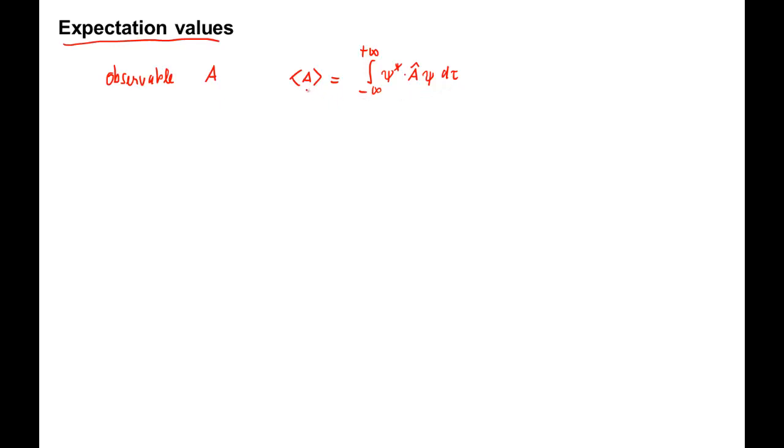The angular brackets indicate the expectation value or average. We can use this bracket notation to abbreviate the integral and write open bracket, psi, vertical bar, A hat, vertical bar, psi, close angular bracket. In this expression, the first psi is implicitly understood to be complex conjugate. The operator A is operating on the second psi on its right, and the two brackets indicate the integration over all space.